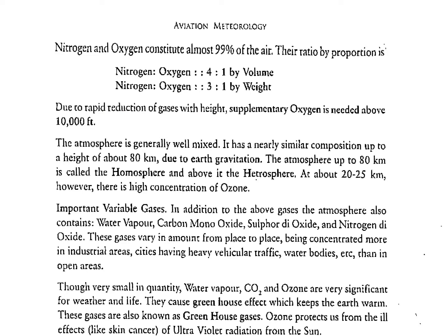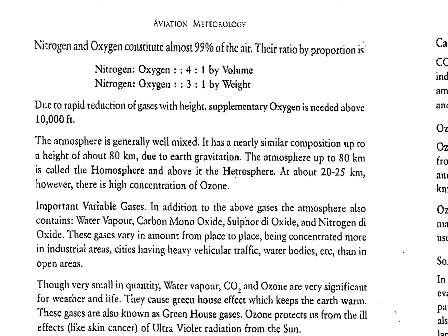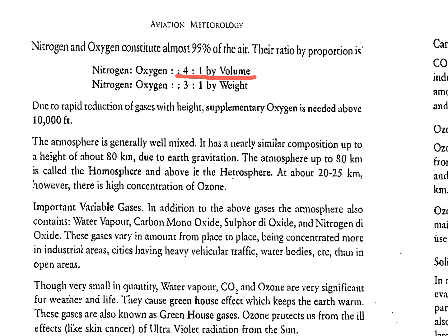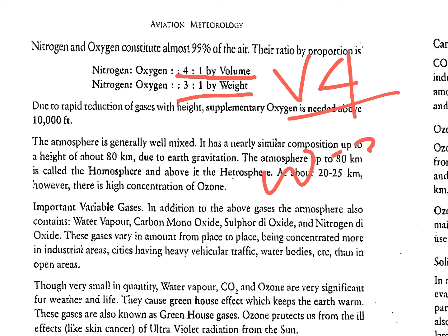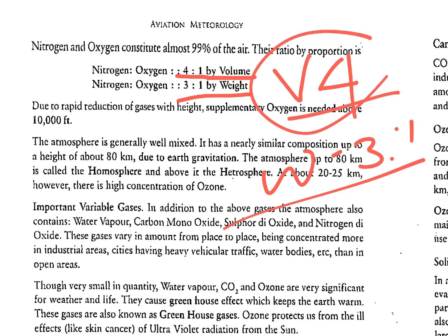Nitrogen and oxygen together constitute almost 99% of the air. The ratio of nitrogen to oxygen is 4:1 by volume and 3:1 by weight — this is important for MCQs. A memory tip: volume starts with V, and the number 4 also has a V shape. So V = 4:1 by volume, and the remaining ratio 3:1 is by weight.